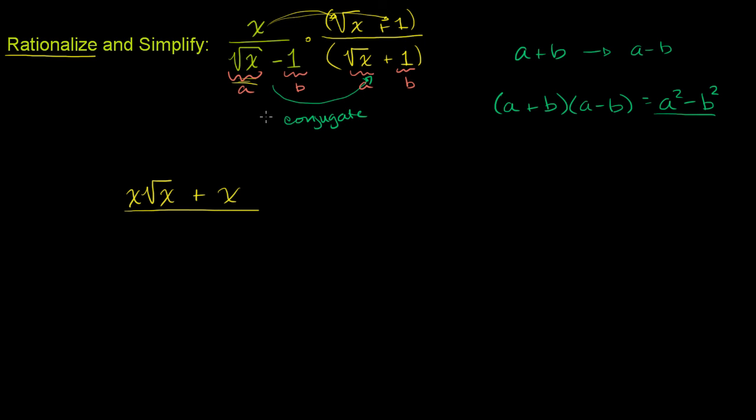You're going to get a difference of squares. So a squared - so if you have the square root of x squared, that's just going to give you x. So this is going to give you x when you square this, minus 1 squared. Well, what's 1 squared? Well, it's just 1.